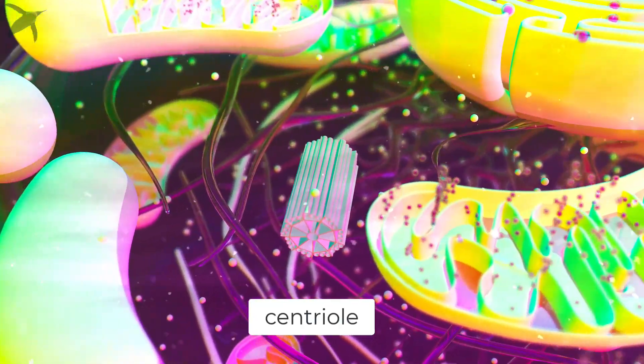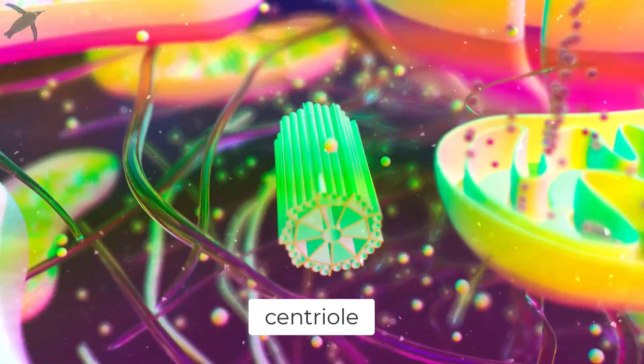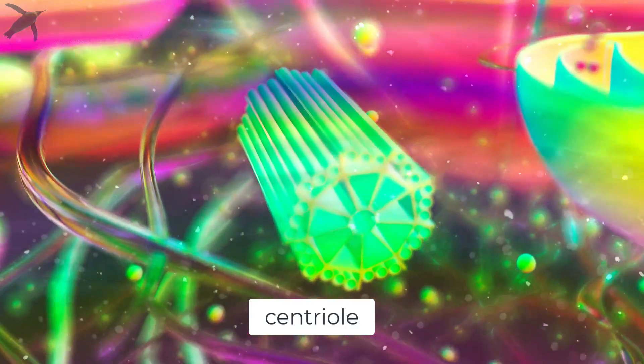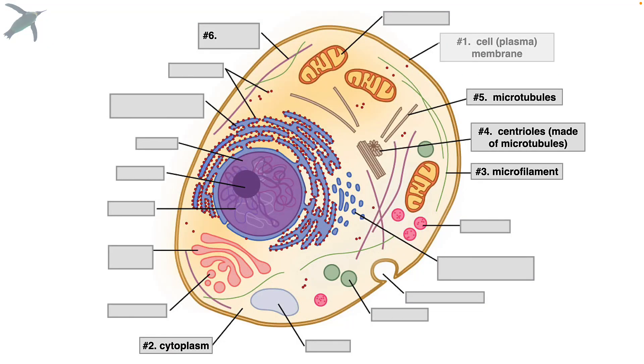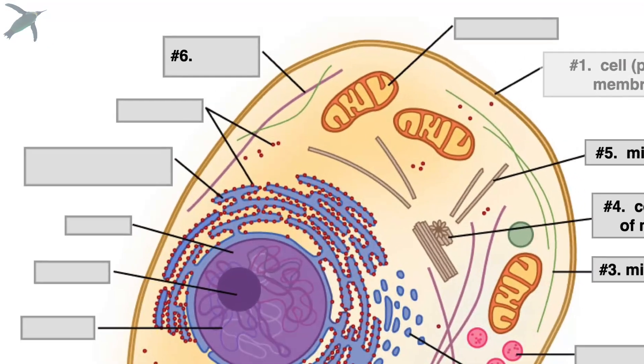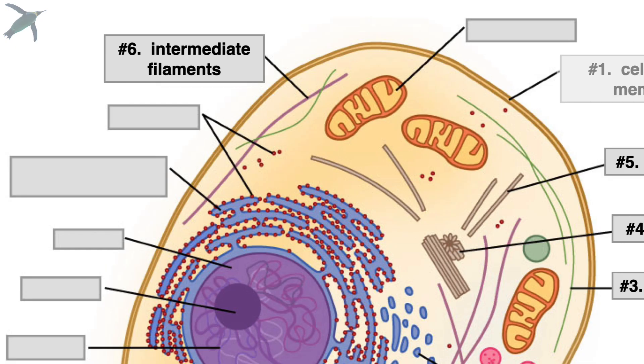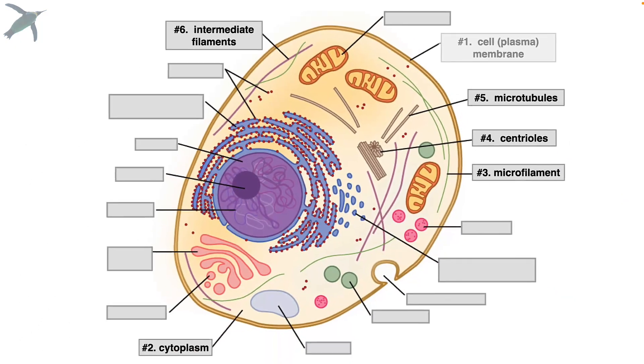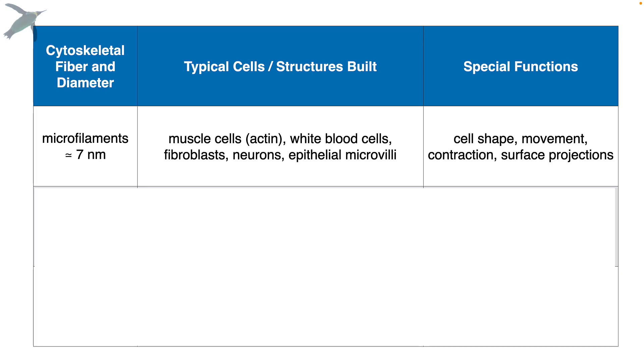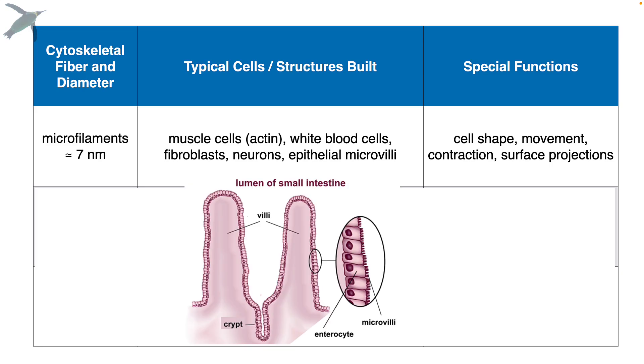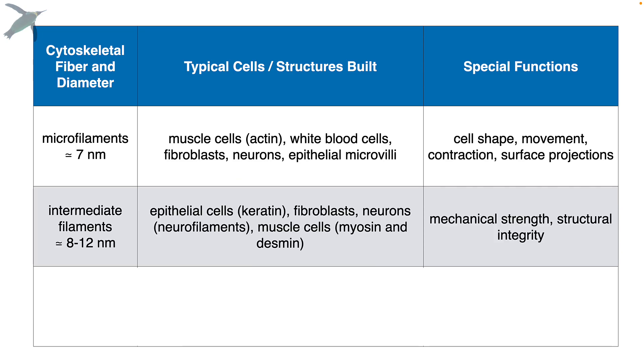Microtubules are the biggest one, and the centrioles actually assist in organizing other microtubules into what we call a spindle during cell division. In between microfilaments and microtubules in size, we have, yeah, intermediate filaments. Sometimes the names make sense. So if you have seen microvilli, the really fuzzy border on some types of epithelia, those are made of microfilaments. Intermediate filaments are about mechanical strength, so we find them in things like keratin in the skin, as well as muscle.